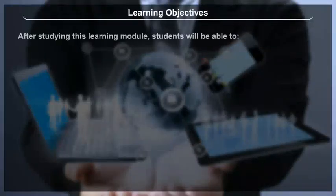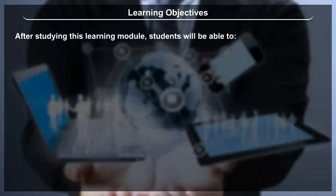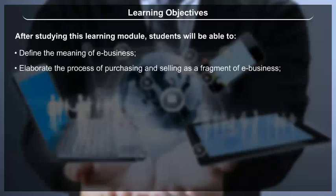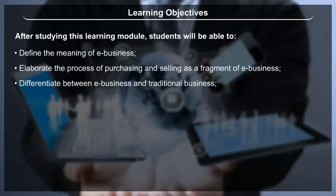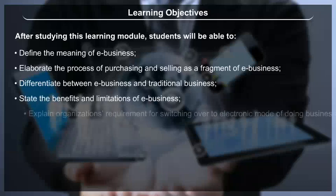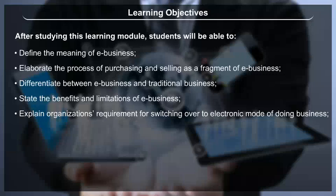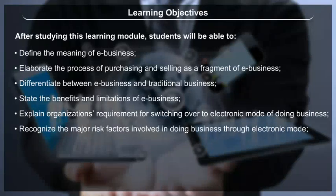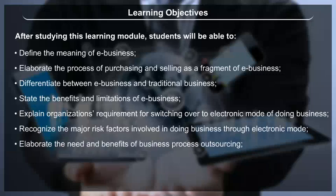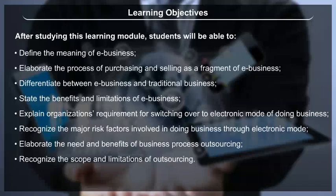Learning Objectives: After studying this learning module, students will be able to define the meaning of e-business, elaborate the process of purchasing and selling as a fragment of e-business, differentiate between e-business and traditional business, state the benefits and limitations of e-business, explain an organization's requirement for switching over to electronic mode of doing business, recognize the major risk factors involved, and elaborate the need and benefits of business process outsourcing.